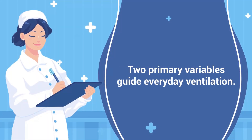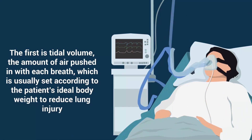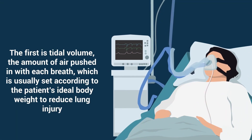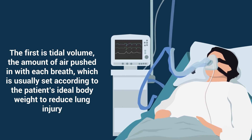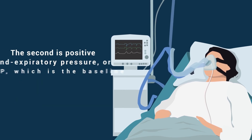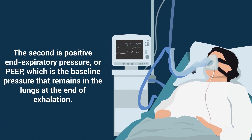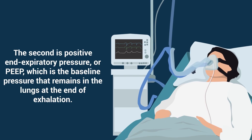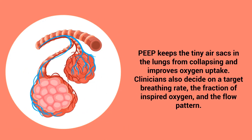Two primary variables guide everyday ventilation. The first is tidal volume, the amount of air pushed in with each breath, which is usually set according to the patient's ideal body weight to reduce lung injury. The second is positive end-expiratory pressure, or PEEP, which is the baseline pressure that remains in the lungs at the end of exhalation. PEEP keeps the tiny air sacs in the lungs from collapsing and improves oxygen uptake.